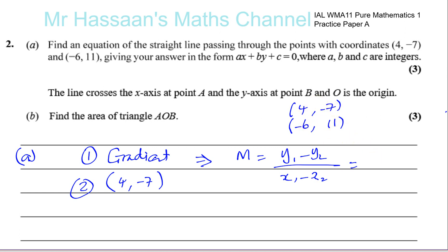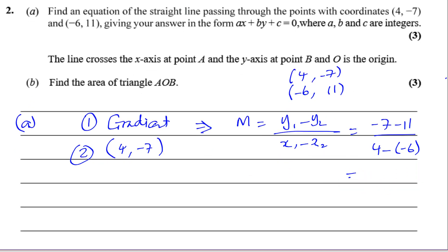For the change in Y, it's -7 - 11. For the change in X, be careful to start from the same point for both: 4 - (-6). That gives -18 over 10, which simplifies to -9/5. So the gradient is -9/5 in simplest form.